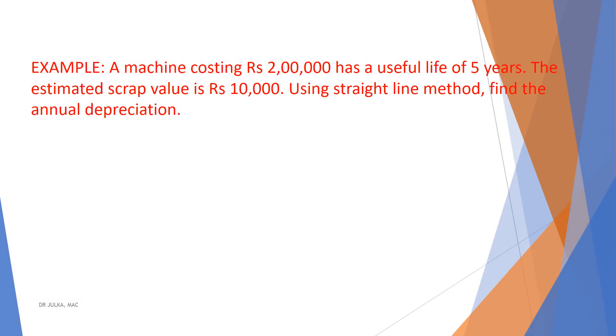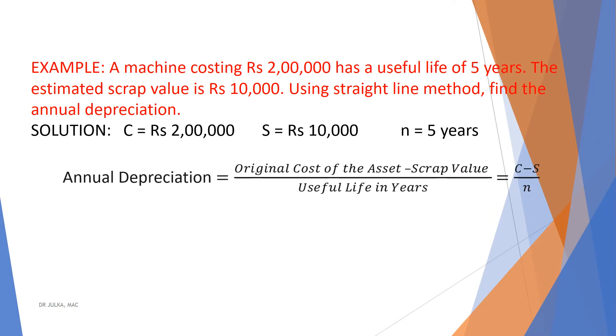In our first example, we want to calculate annual depreciation using straight line method, where a machine costing 2 lakh rupees has a useful life of 5 years and the estimated scrap value is 10,000. In this example, cost is 2 lakh rupees, scrap value 10,000 and N is 5. Using straight line method, annual depreciation equals original cost of asset minus scrap value divided by useful life in years. Put C equals 2 lakh rupees, S equals 10,000 and N is 5. Then annual depreciation is Rs 38,000 after calculation.